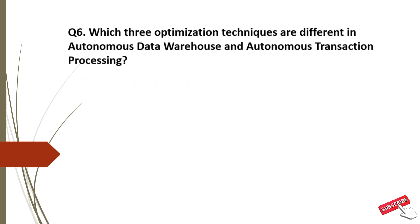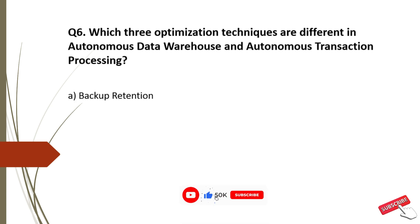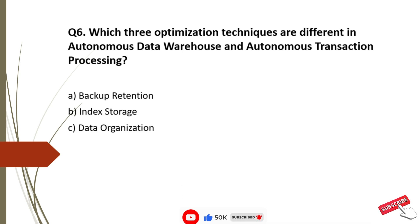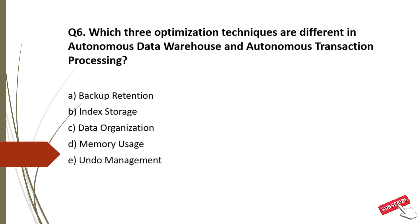Question 6: Which three optimization techniques are different in Autonomous Data Warehouse and Autonomous Transaction Processing? Options: A. Backup Retention, B. Index Storage, C. Data Organization, D. Memory Usage, E. Undo Management.